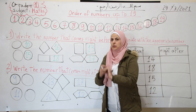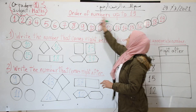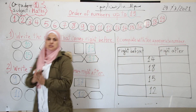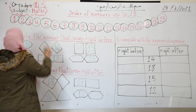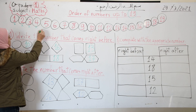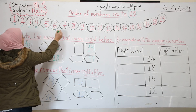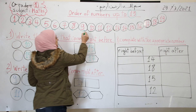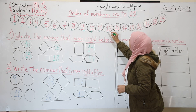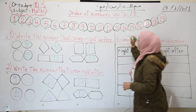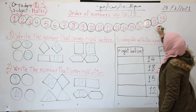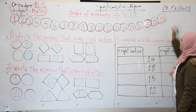Good morning! Our new lesson is about ordering numbers up to 19. First, let's remember the numbers from 1 to 19: 1, 2, 3, 4, 5, 6, 7, 8, 9, 10, 11, 12, 13, 14, 15, 16, 17, 18, 19.